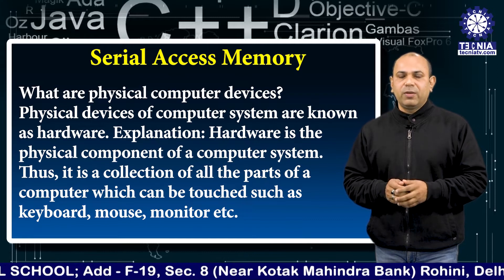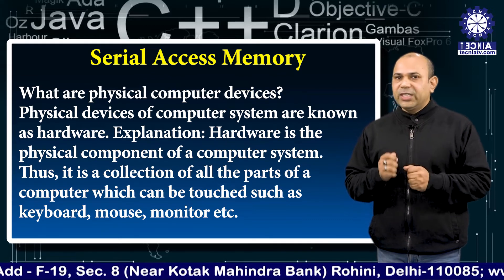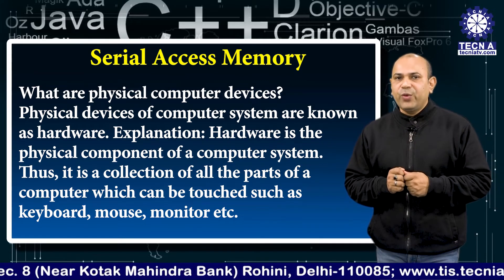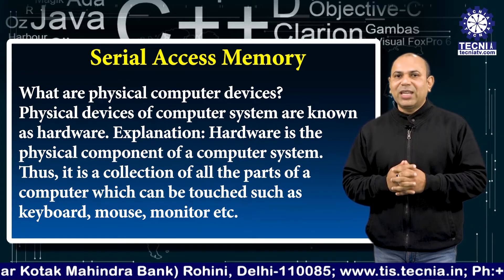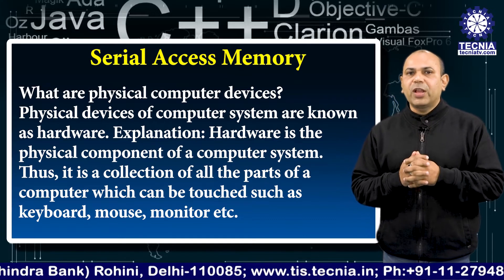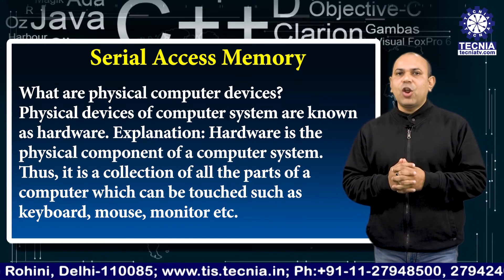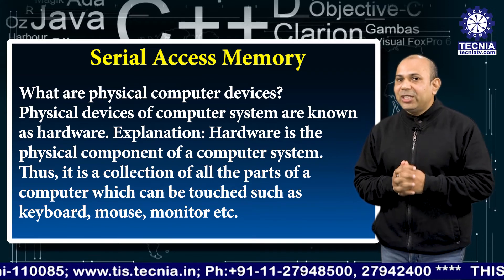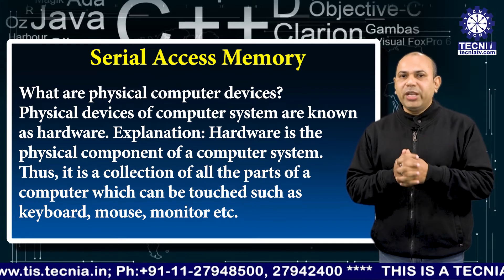What are the different types of physical devices of a computer? Physical devices of a computer system are known as hardware. Hardware is the physical component of a computer system — it is a collection of all parts of the computer which can be touched, such as keyboard, mouse, and monitor.